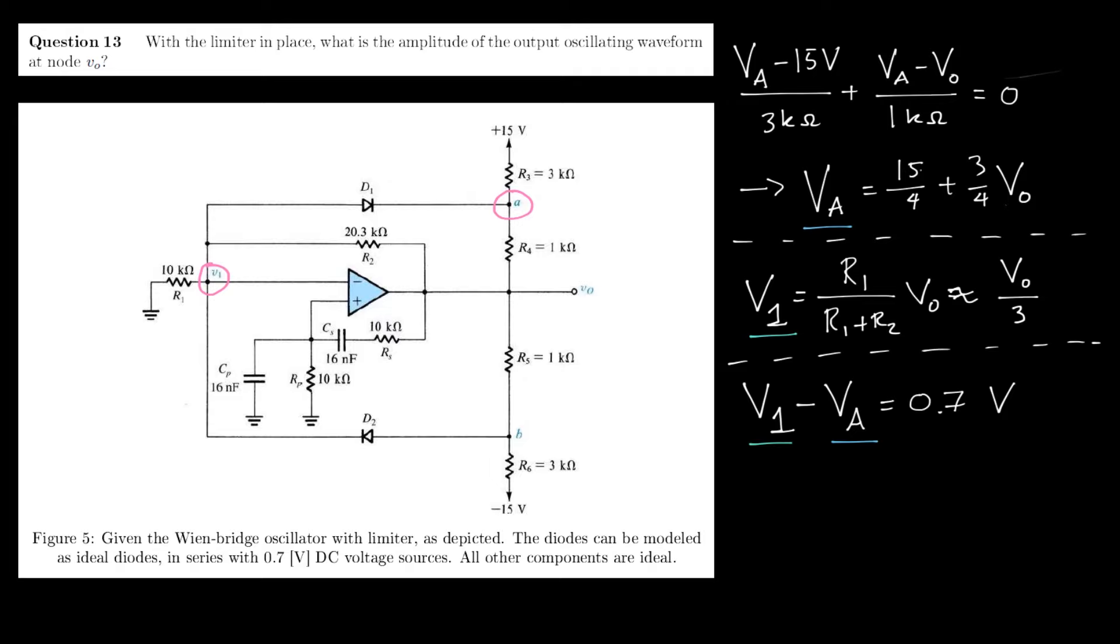And that will give you a final numerical value of negative 10.68 volts approximately. So the amplitude of the output oscillating waveform will be approximately 10.68 volts.